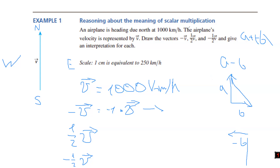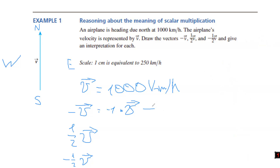So what would be V multiplied by minus 1? If V is heading north, the resulting vector would head south — it would be pointing downward. That's minus V. But what about its magnitude? The magnitude is not affected, because we're multiplying by a scalar that is not a fraction less than 1.